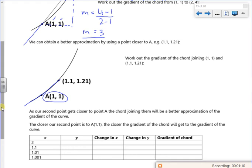So let's have a look at this. If I do a change in y, so 1.21 minus 1, over the change in x, 1.1 minus 1. So m is 0.21 over 0.1. If you remember from GCSE, dividing by 0.1 is the same as times it by 10. So that now gives me a better gradient of the tangent. It's now 2.1.